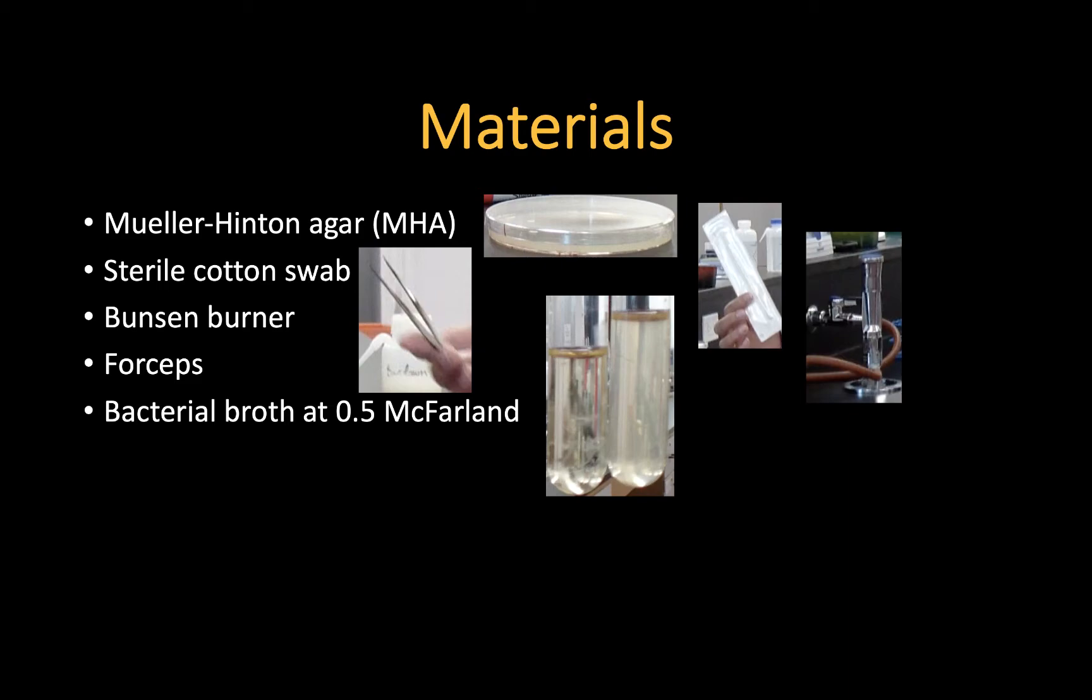In this picture here, you see an uninoculated broth on the left, and a broth at about 0.5 McFarland standard. As you can see, the 0.5 McFarland standard is just barely cloudy compared to an uninoculated tube, as you see on the left-hand side here.